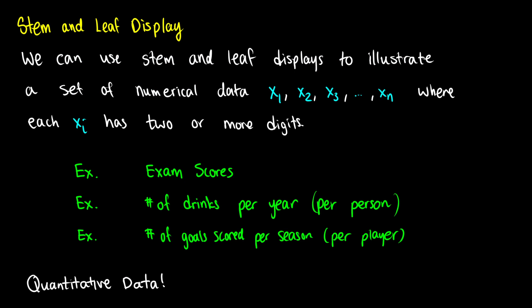A stem and leaf display is used to illustrate numerical data. You could have values x1, x2, x3, all the way up to xn — so it's finite — and each of these xi's has two or more digits. In other words, these are numbers like 21 or 2342, or numbers with decimals like 2.0 and 2.1. These don't work too well if we just have single-digit numbers like 2, 3, 4, 5.